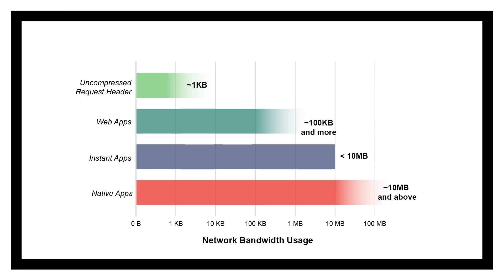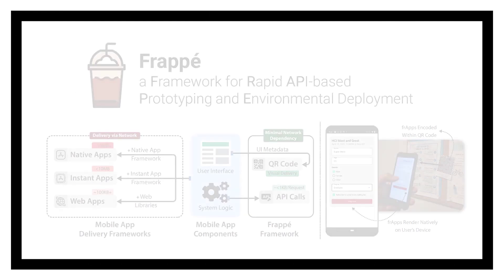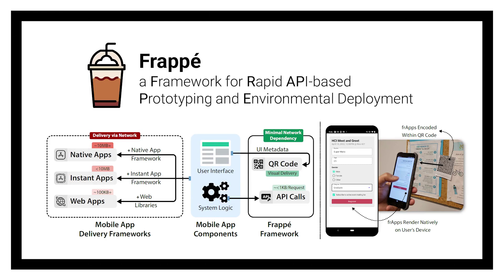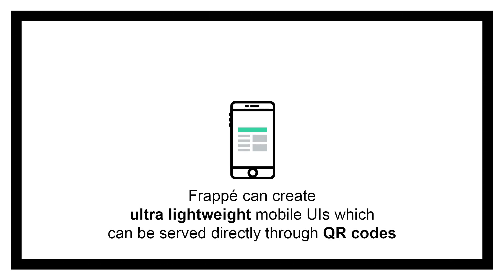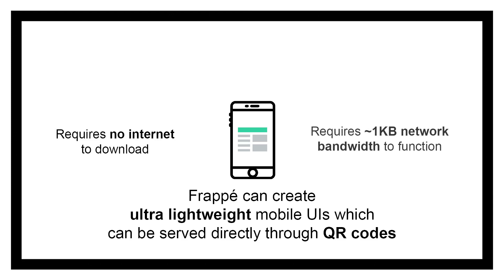We leverage this to create our mobile application framework, Frappe, which can augment the interactive capabilities of QR codes to not just redirect users to app markets, but instead serve the entire app's user interface without the need for any network connection. Using Frappe, app developers can create ultra-lightweight functional apps which can be loaded on a mobile device without any network connection, and requires a minuscule amount of bandwidth for operation, making it suitable for ubiquitous use even in areas with very limited network connectivity.